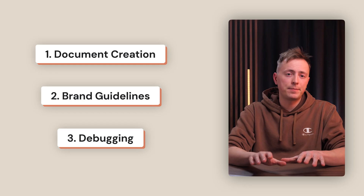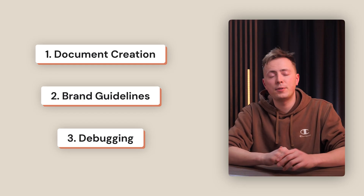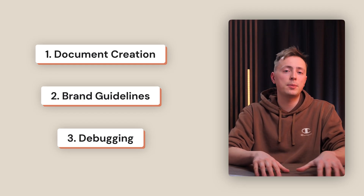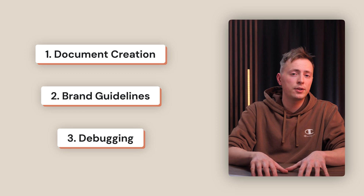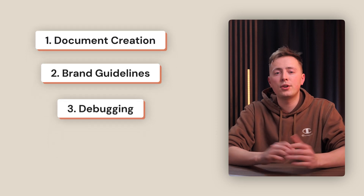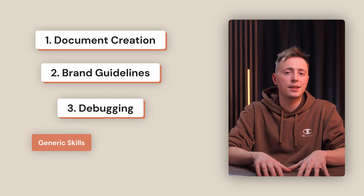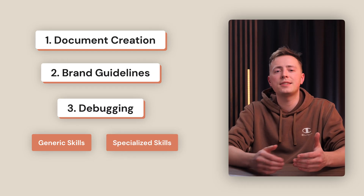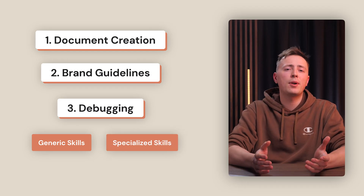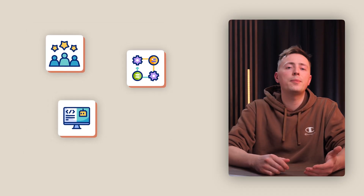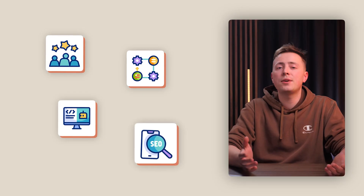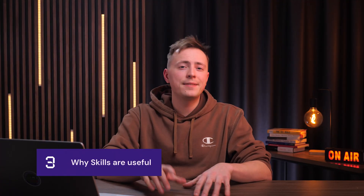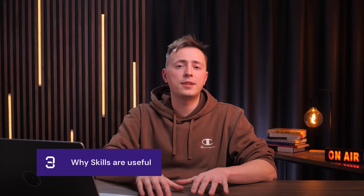Third, debugging. Developers, this one's for you. You can create a skill to find and fix problems in your code following your team's debugging standards. You can create a generic debugging skill or make it more specialized for CSS layout issues, website problems, or API endpoints. You can actually build skills for client reports, project workflows, code formatting, SEO checking — you name it. Skills ensure consistent quality, time savings, and smarter ways of working.